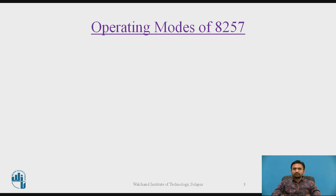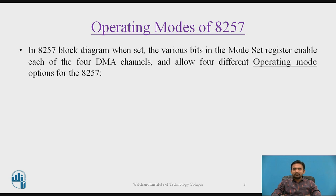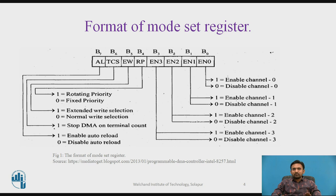Now, operating modes of 8257. In the 8257 block diagram, when set, the various bits in the mode set register enable each of 4 DMA channels and allow 4 different operating modes for the 8257. From the block diagram, we can see the total number of DMA channels, which is 4.